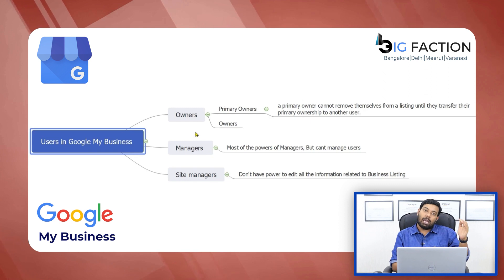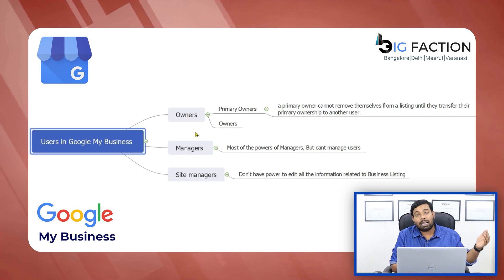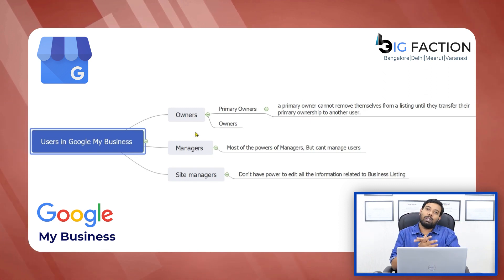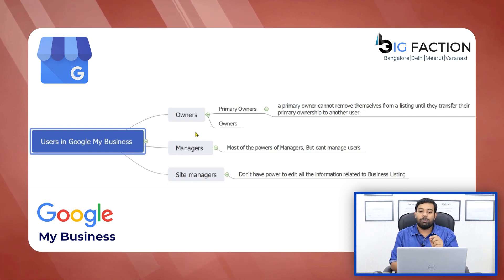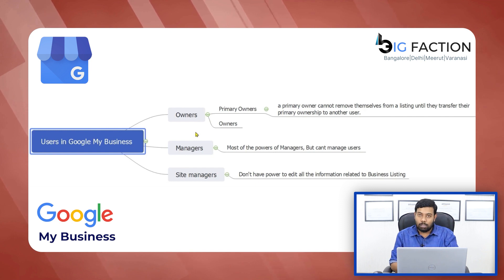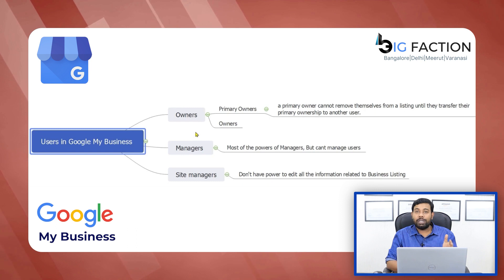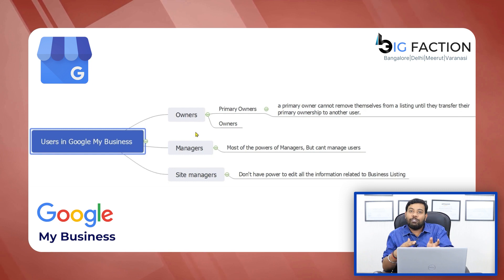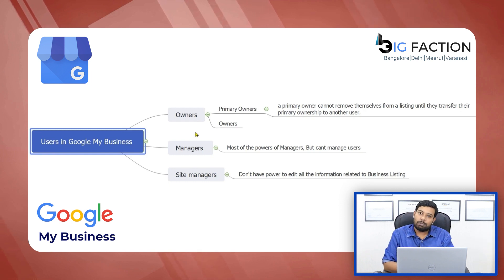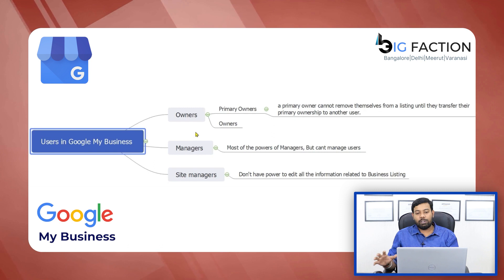The primary owner can also give all the user rights to other owners. An important point: a primary owner cannot remove themselves from a listing until they transfer the primary ownership to someone else. So if you are a primary owner, you can't remove yourself until you make another owner and then transfer the primary owner access to them first, and then remove yourself.